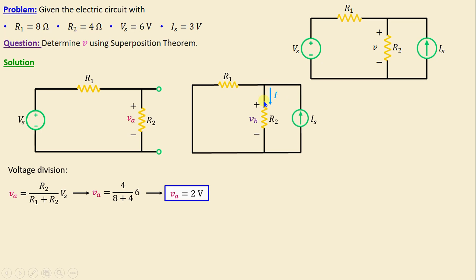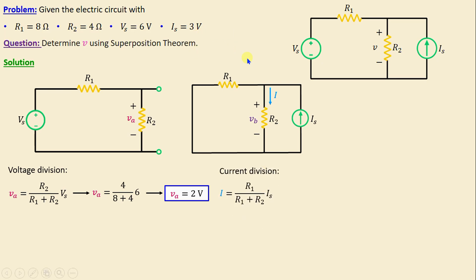To calculate the current I, we can apply the current division method. That means I is equal to R1 over (R1 plus R2) times IS. If we replace R1, R2, and IS with their numerical values, we obtain I is equal to 2 amps.